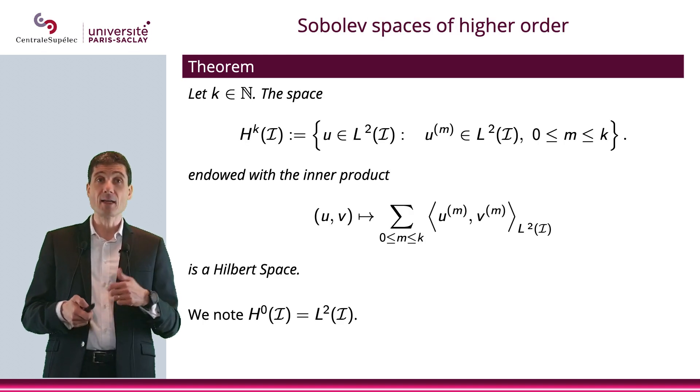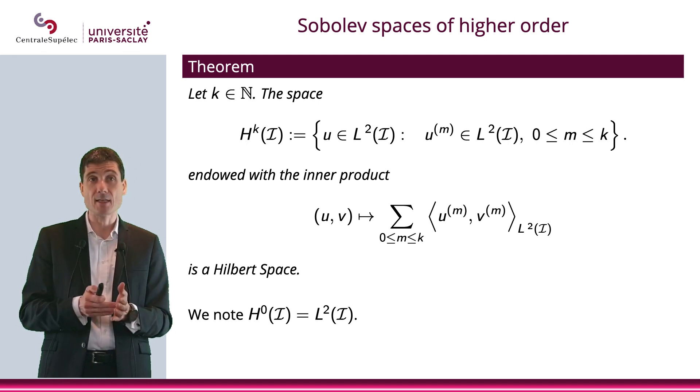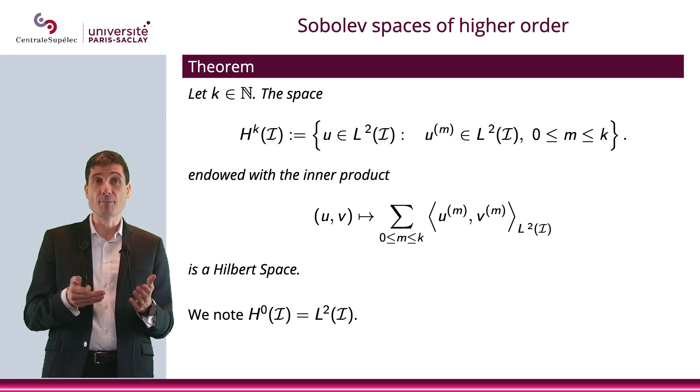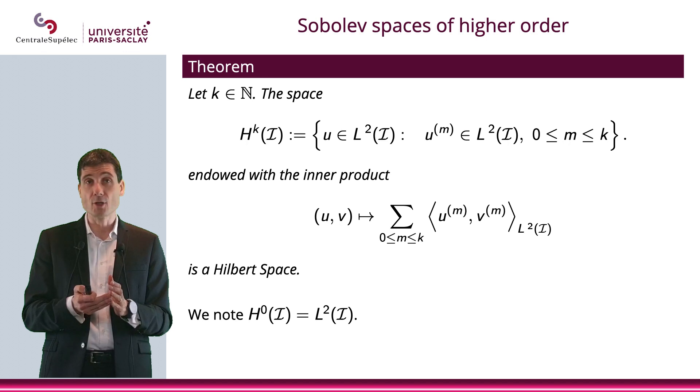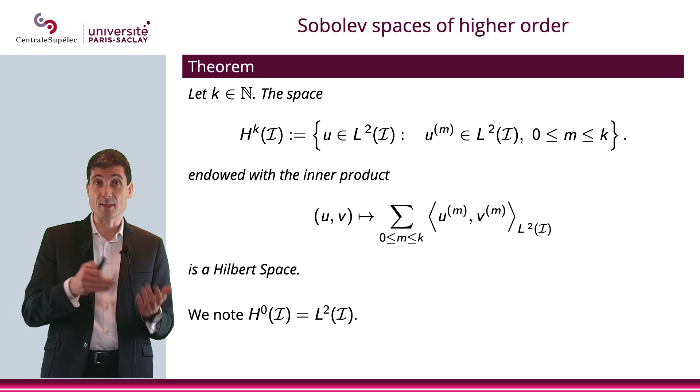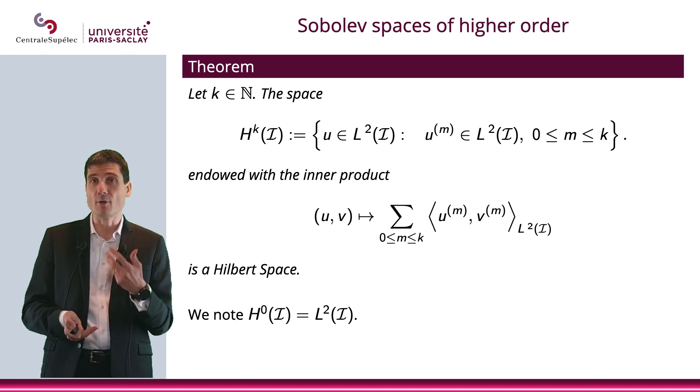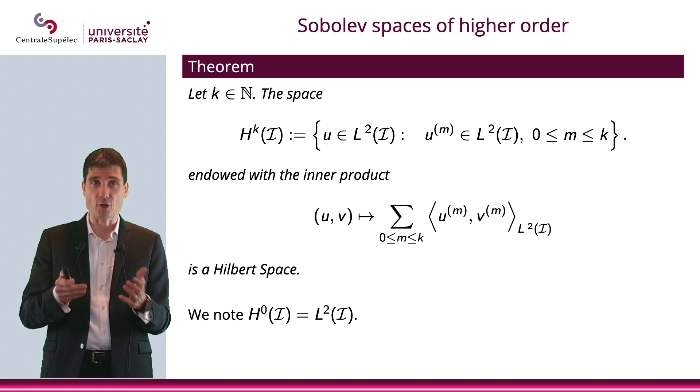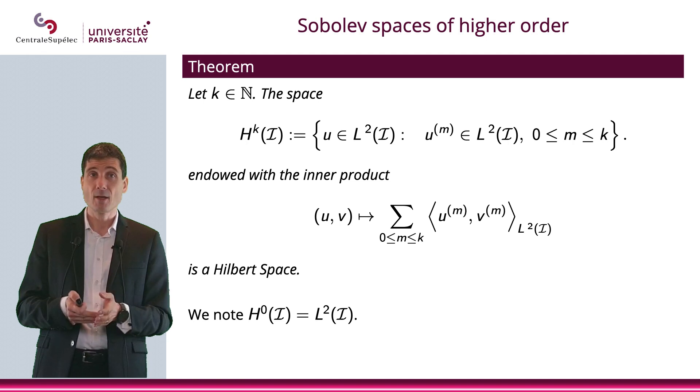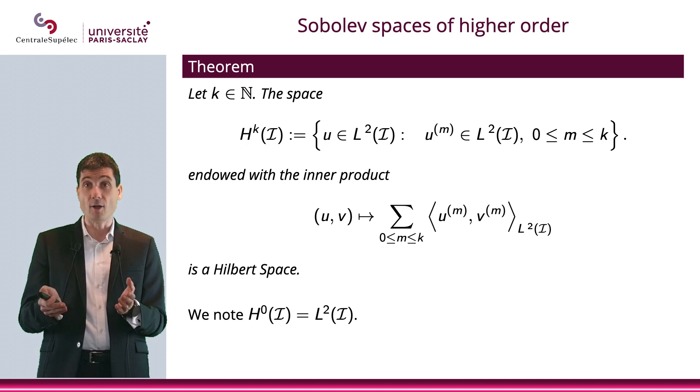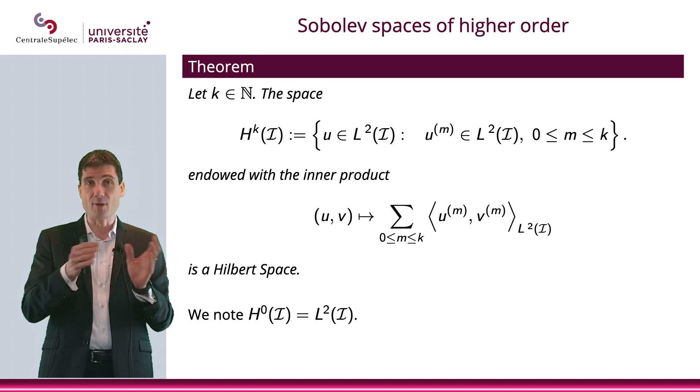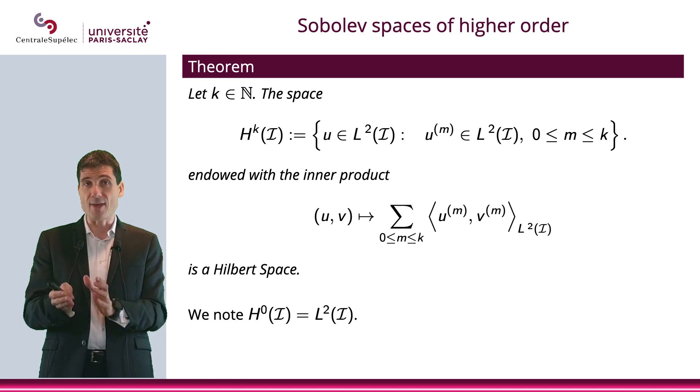Now, I could define H^k for any k in N the following way: H^k is the space of u's in L^2 such that the m-th derivative is in L^2, m being between 0 and k. When I do the 0th derivative, it's just taking the function. And I can endow this linear space with an inner product, which is the sum of all the L^2 inner products of u and v, u' and v', all the way to u^(k) and v^(k).